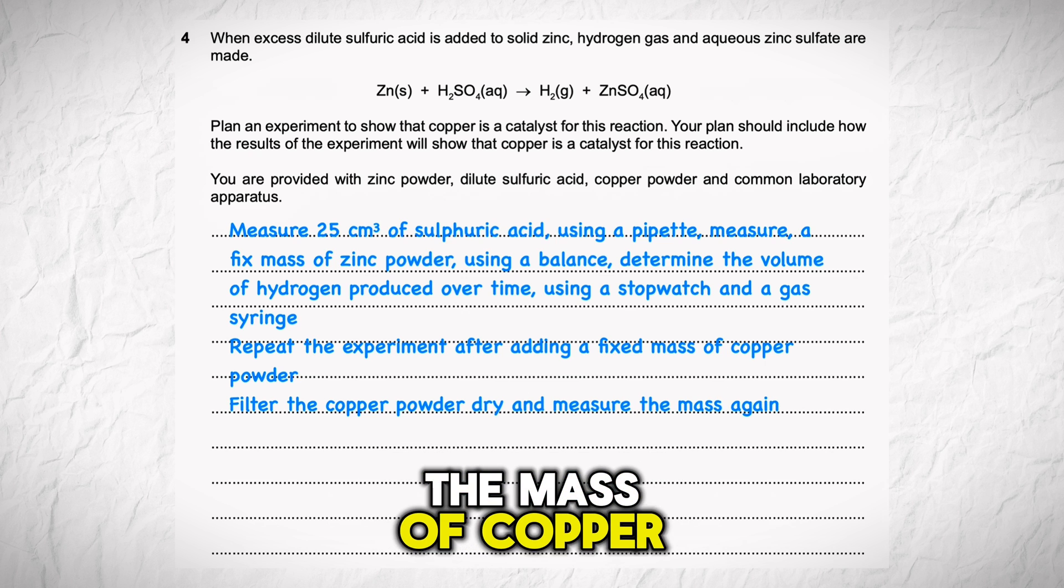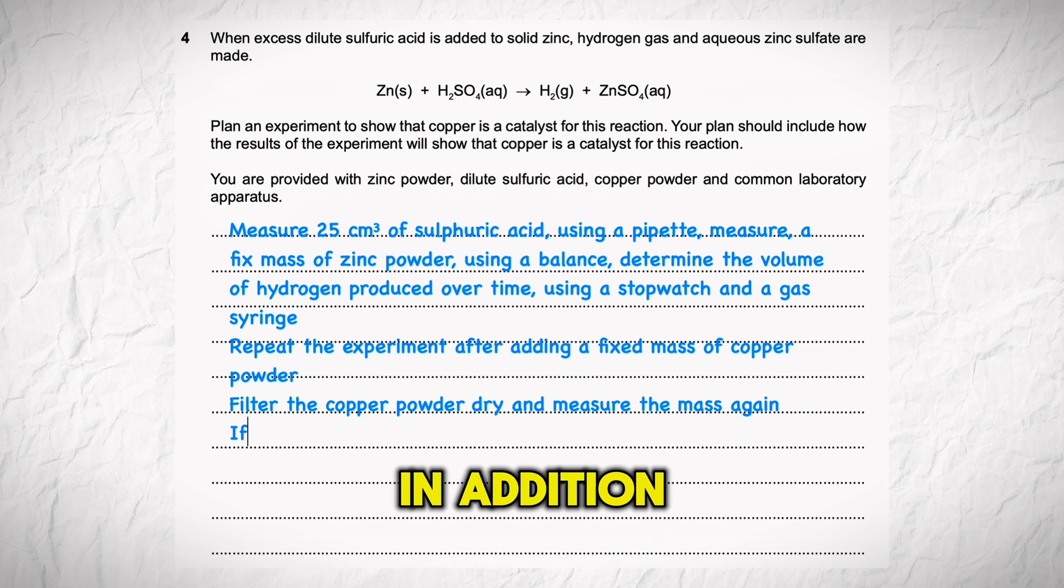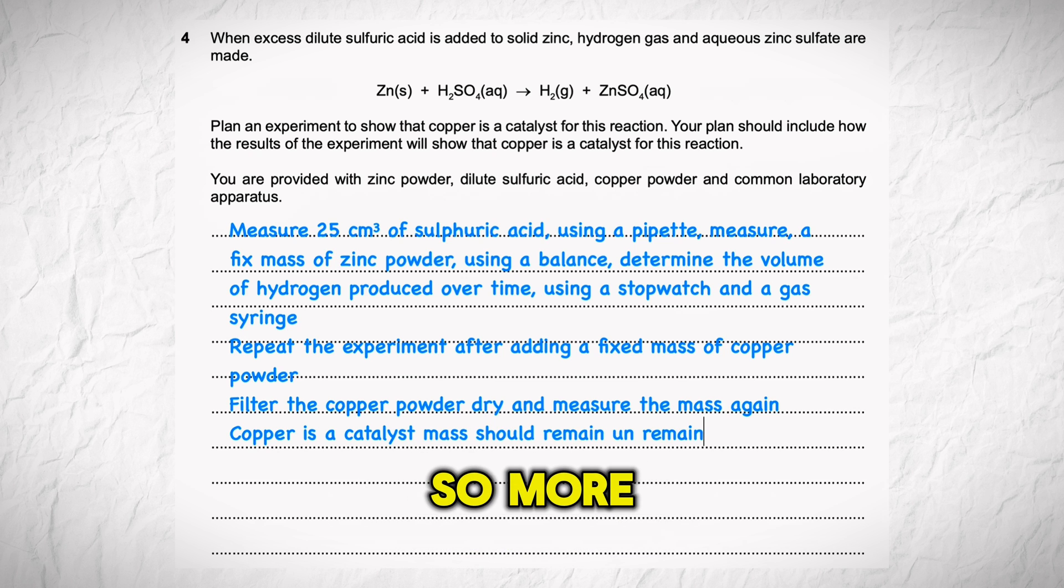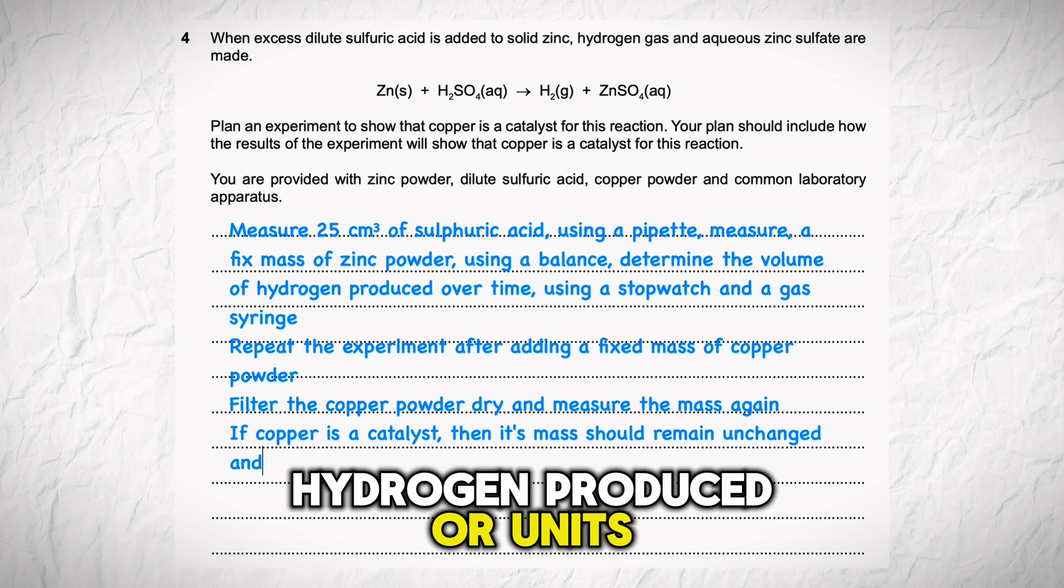The mass of copper should remain unchanged. In addition, the rate of reaction should be faster, so more volume of hydrogen should be produced per unit of time.